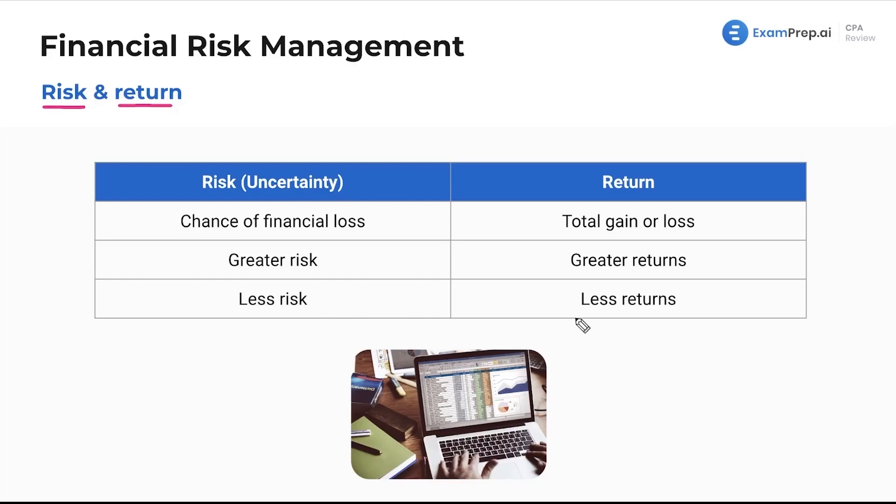So generally that is less risk, less return. So you get lower returns on that, but there's zero risk. You invest in risky startups like Uber and Netflix, right? You're going to have greater returns because you took on greater risk.